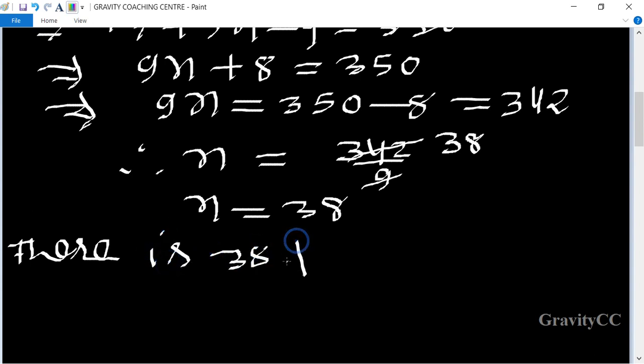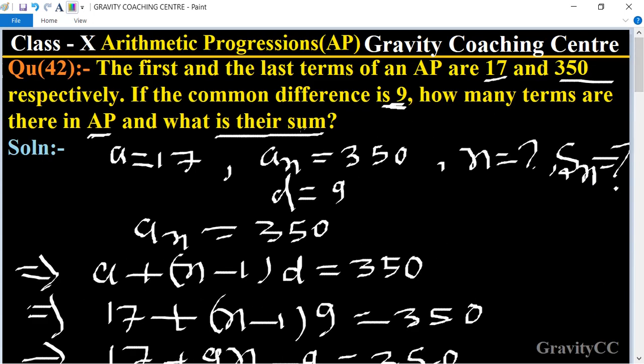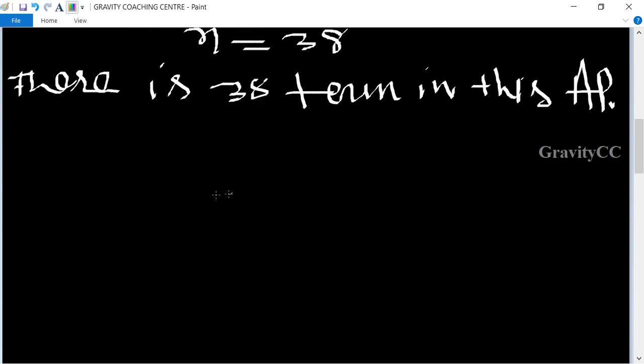And also find their sum, means Sn. So we know that the formula of Sn is n upon 2 times (a plus last term).